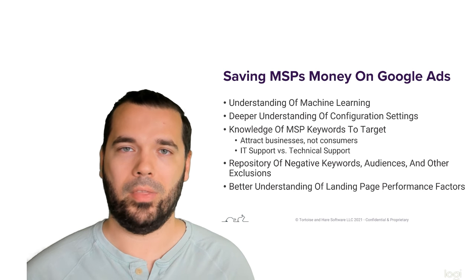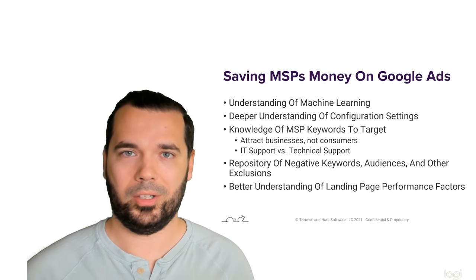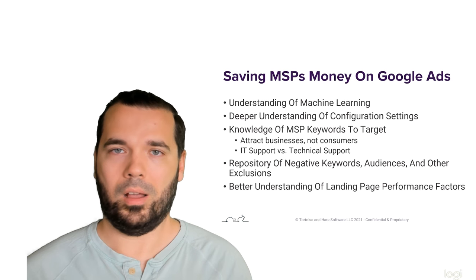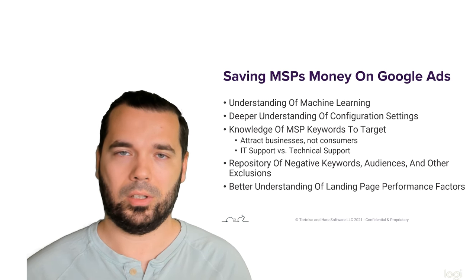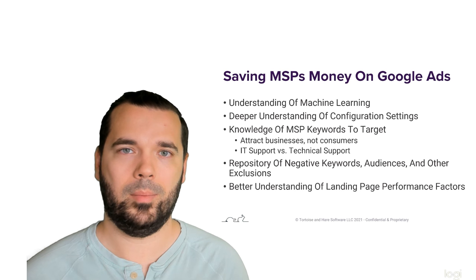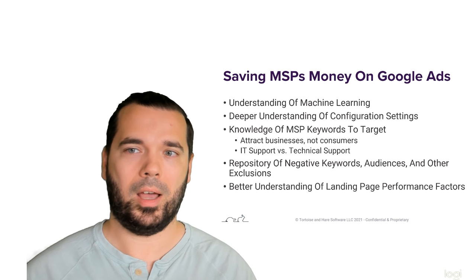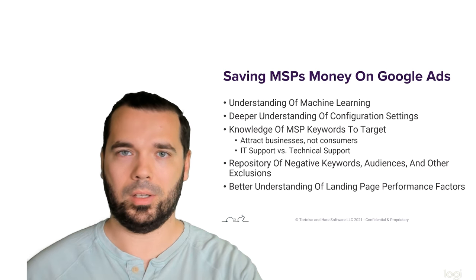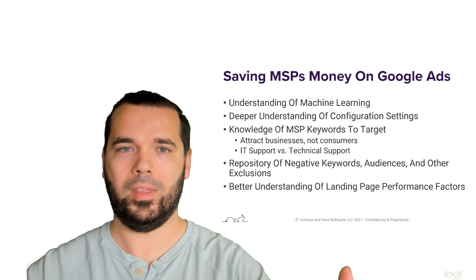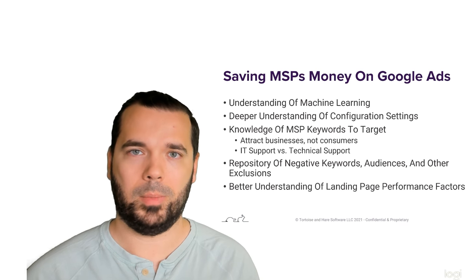Almost more importantly, we know who not to target. We have a repository of negative keywords that can dramatically improve the performance of your account right out of the gate — discovered through advertising our way through to finding them. When you hire Tortoise and Hare Software, you get those learnings, including audiences to exclude. This is becoming more important as targeting accuracy goes down — people are in multiple overlapping audiences, so you need to both target desirable audiences and exclude irrelevant ones, such as people searching for employment.